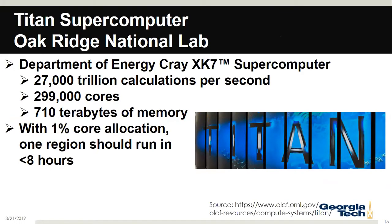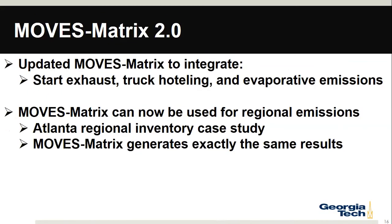It would take our cluster a long time to run the entire nation. Looking at the Oak Ridge National Labs Titan supercomputer — with 27 trillion calculations per second, about 300,000 cores, and 710 terabytes of memory — even if they allocated 1% of their cores to this run, they should be able to do one region in less than eight hours, making it not terribly long to knock out the entire United States.